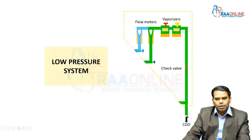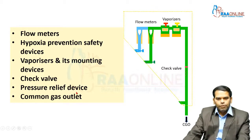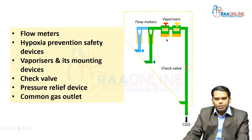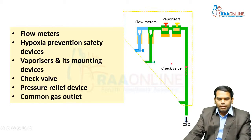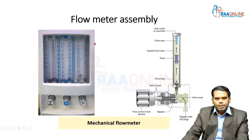The components included in the low pressure system are: flow meters, the hypoxia prevention safety devices, the vaporizers and their mounting devices, the check valve, the pressure relief device, and the common gas outlet. The pressure in this system is slightly above atmospheric.